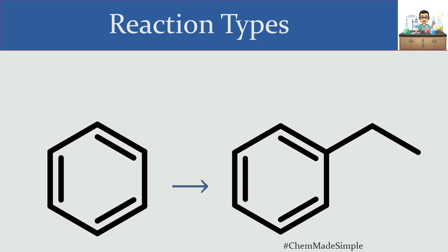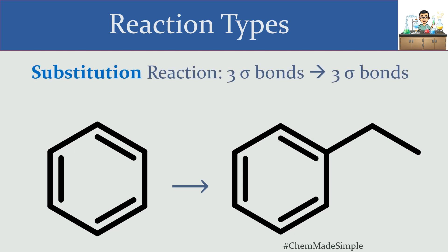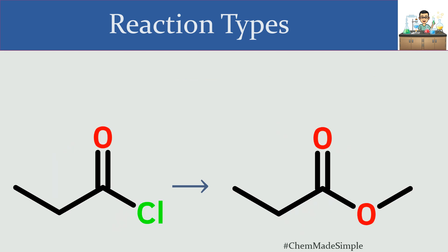In this next reaction, the reactivity is happening at this particular carbon — we're lengthening the carbon chain and an ethyl group is now attached. Looking at Sigma and pi bonds: originally I had three Sigma bonds, and in the end I still have three Sigma bonds. The number of pi bonds has not changed, and the number of Sigma bonds has not changed. So this is an example of a substitution reaction.